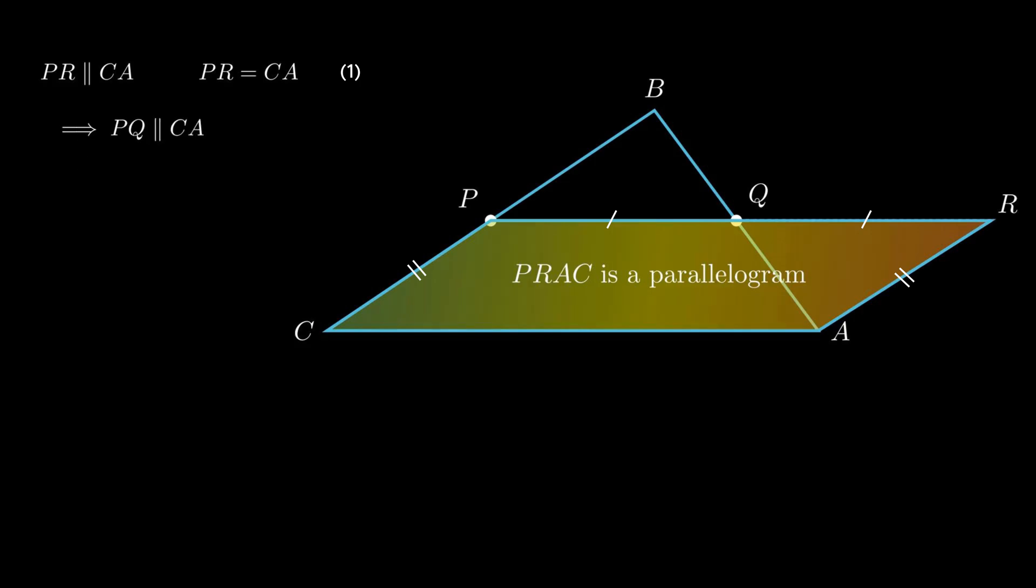From figure, segment PR is equal to the sum of segment PQ and segment QR. As by construction, segment PQ is equal to segment QR, segment PR becomes twice of segment PQ.